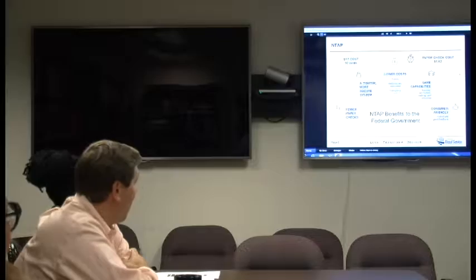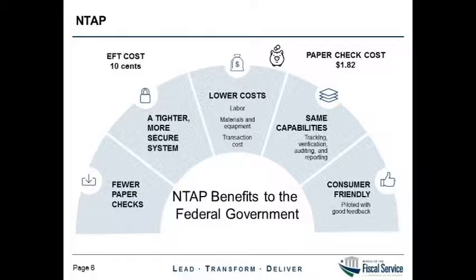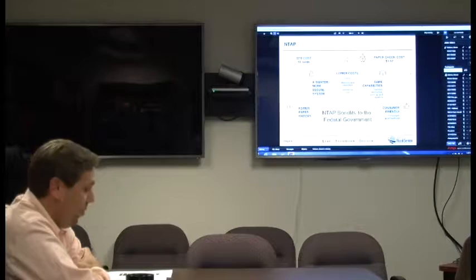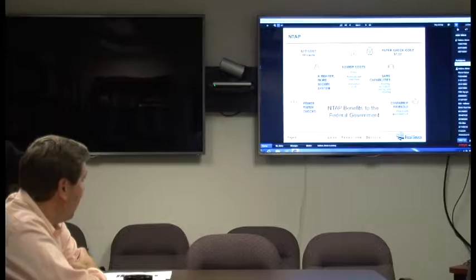NTAP converts a million paper checks to a more electronic process. You get tighter controls in place and a more efficient process. To the government and to the taxpayer, it's a more cost-effective program. That's $1.82 on the happy path for a paper check versus about a dime for an EFT payment. You can imagine converting 60 million of those would be a good thing to the taxpayer.